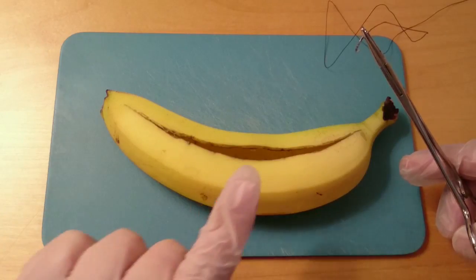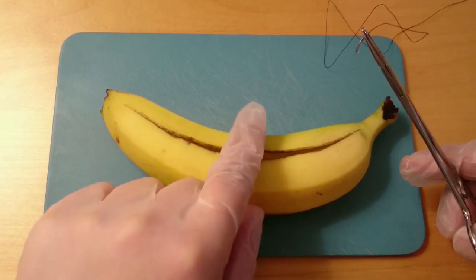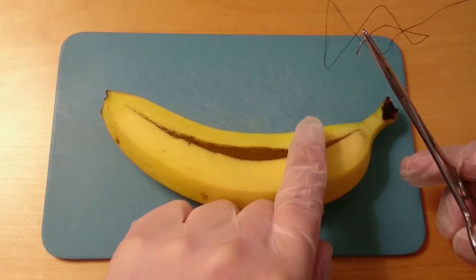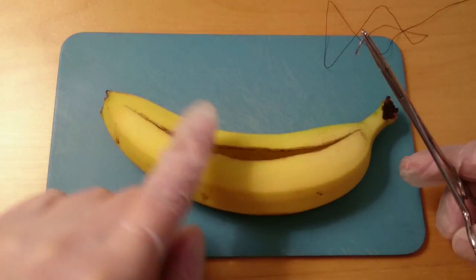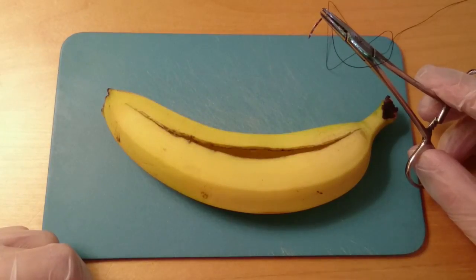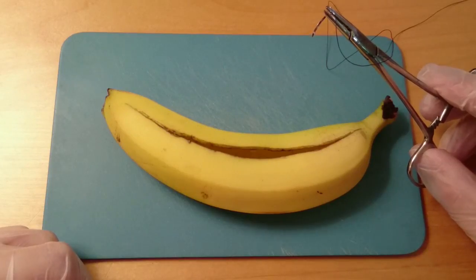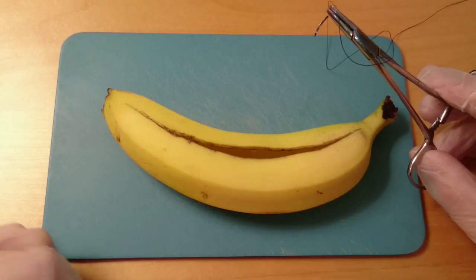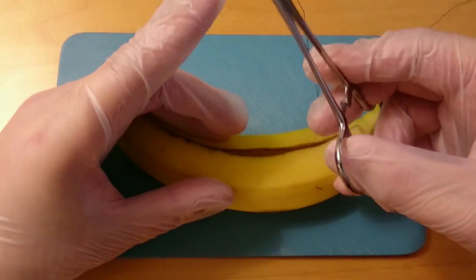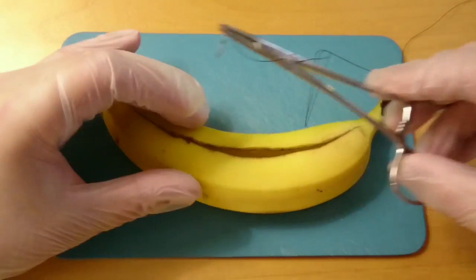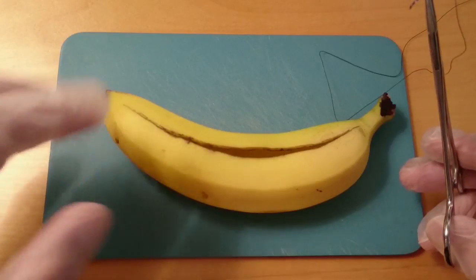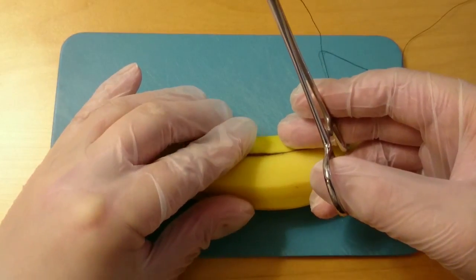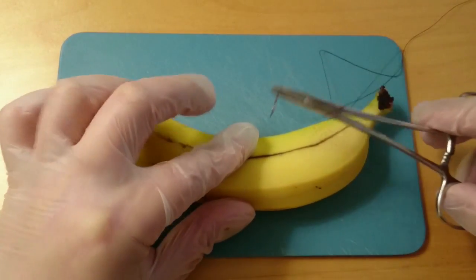When suturing, you always start suturing at the middle of the wound, then half, half, half. A tip while suturing is always keeping contact with the patient. For example, you have a finger down on the patient. Starting with placing the wound in a good position, and we start in the middle.